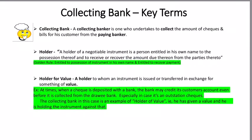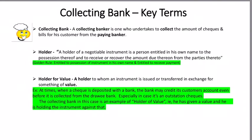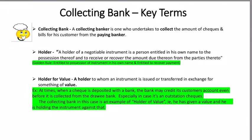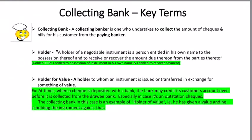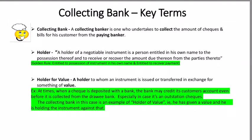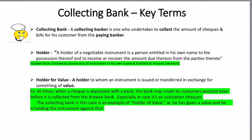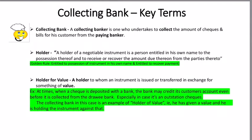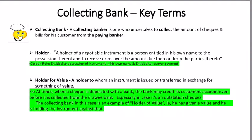But supposing Mr. X gave a gift check to one of his relatives — does his relative become a holder? Yes, because he is entitled to possession of the instrument; it is in the relative's name, and he can deposit the check and get the payment. So he is a holder. But is Mr. X's relative a holder for value? No, because he has not delivered anything — it is a gift check, so he is not a holder for value.